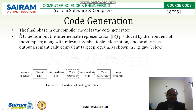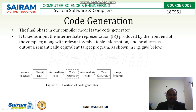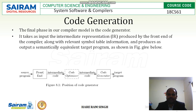The final phase in our compiler model is the code generator. It takes as input the intermediate representation produced by the front end of the compiler, along with relevant symbol table information, and produces as output a semantically equivalent target program. It takes the intermediate code as input and converts it into the target program, which is the assembly language.